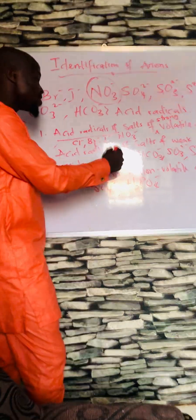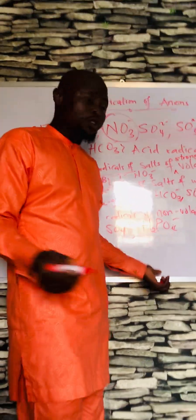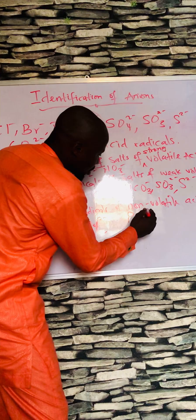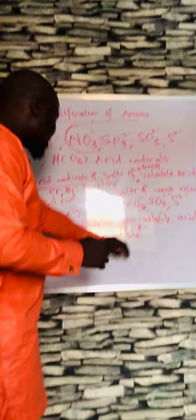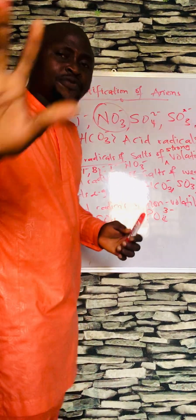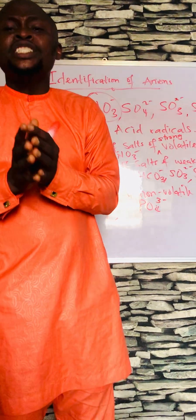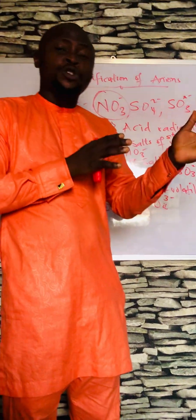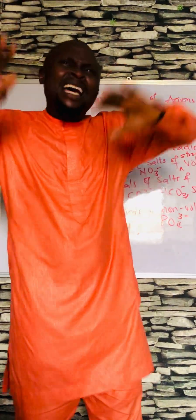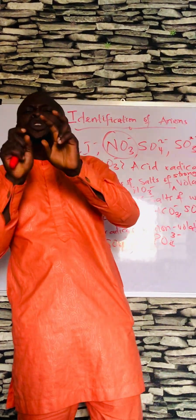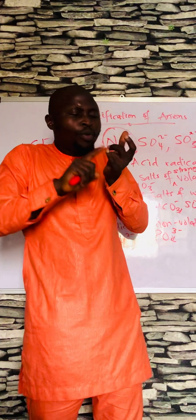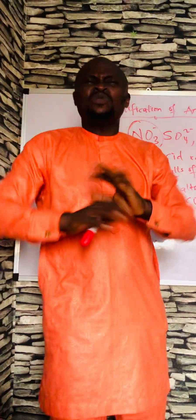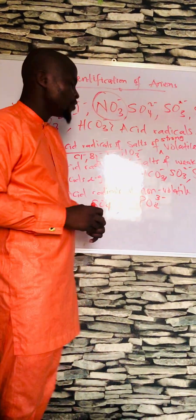Thirdly, we have acid radicals of non-volatile acids. Tetraoxosulfate(VI) ion is an example of a non-volatile acid radical. H3PO4 — tetraoxophosphate(V) ion — is another example. Now, once you know this classification, you should also know the reagents. In anions, there are two ways to identify them: number one, you can use precipitating agents; number two, you can use oxidizing agents. We will cover these in successive classes.